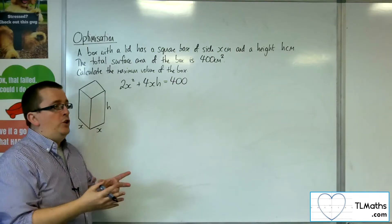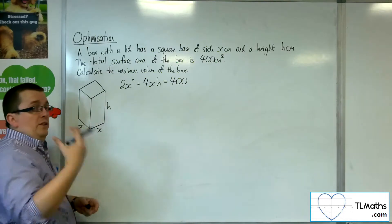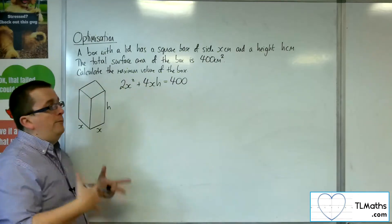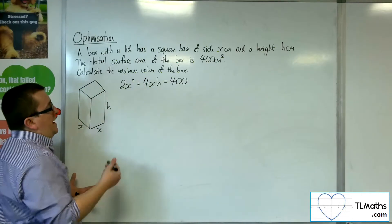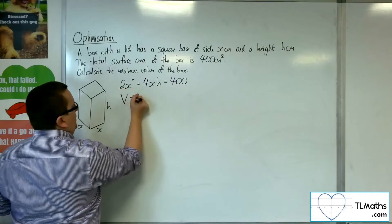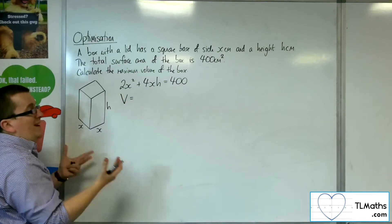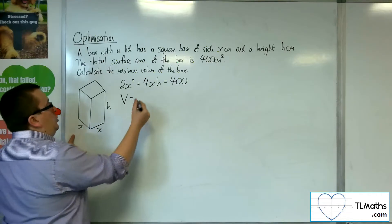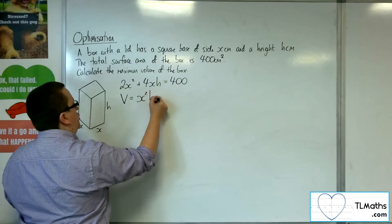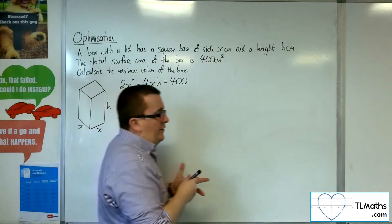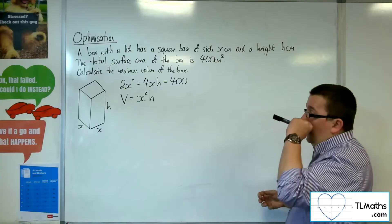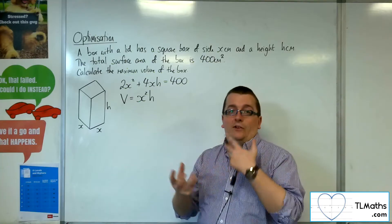That's the first equation. The other bit of information is that we want to calculate the maximum volume of the box. We don't know the volume, but we can write down an equation for the volume: x times x times h, so x squared h. So now we have two equations and we've got these two unknowns, x and h.